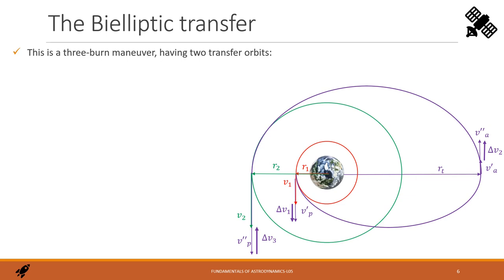The bi-elliptic transfer is a three-burn maneuver. It uses two transfer orbits. The first is an ellipse having a periapsis equal to R1, the radius of the starting orbit, and the apoapsis equal to RT, which we can choose and must be much greater than R2, the target orbit radius. The second transfer orbit is still an ellipse having apoapsis equal to RT and periapsis equal to R2. The starting and target orbits can be circles or coaxial ellipses, as per the Hohmann problem. We can demonstrate that for R2 greater than 12 times R1, this maneuver is more fuel-efficient than the Hohmann one, even though it is a three-burn maneuver.